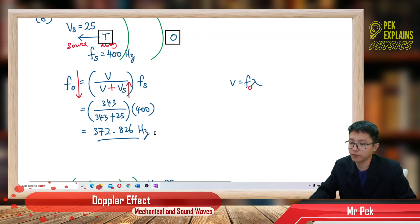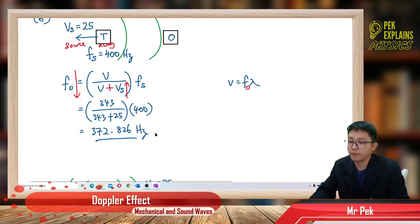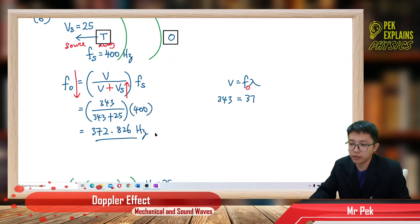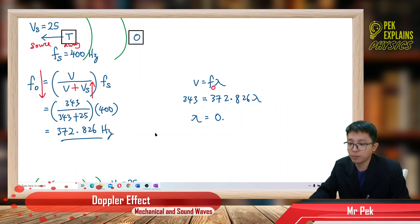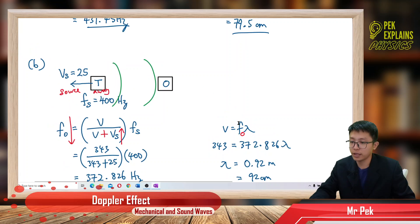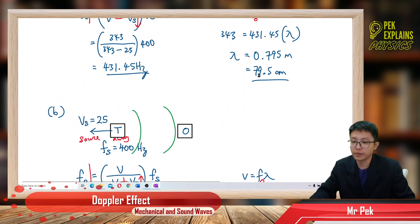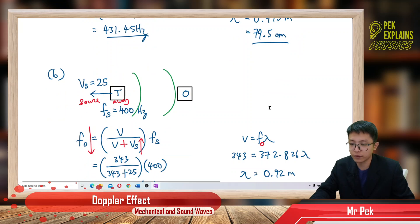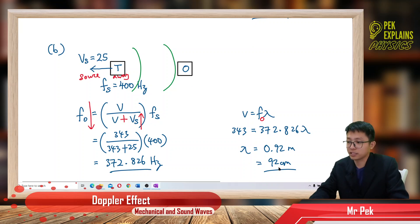The observed frequency dropped because the source is moving away. Now let's find the wavelength. Speed of sound is 343, and with the lower frequency, the wavelength is 0.92 meter, which is also 92 centimeters. This time, the wavelength became longer than before — it was 79.5 cm, now it's 92 cm. Expected — the wavelength became longer.